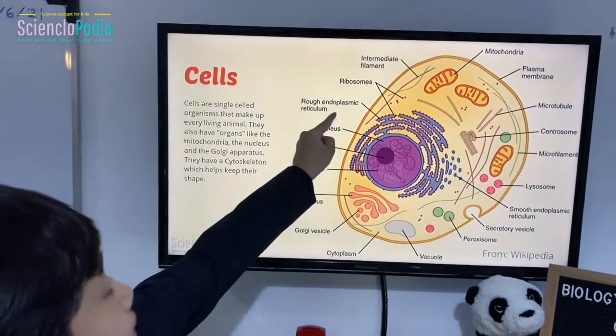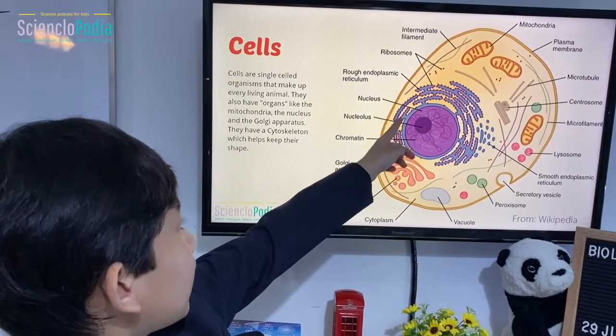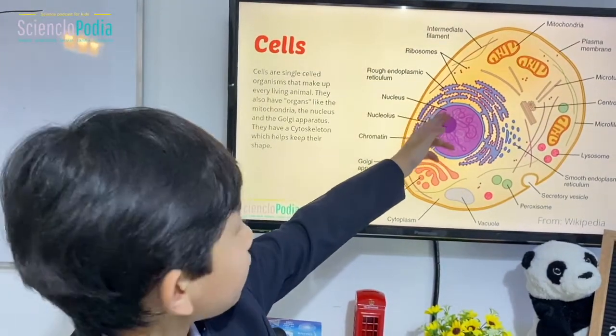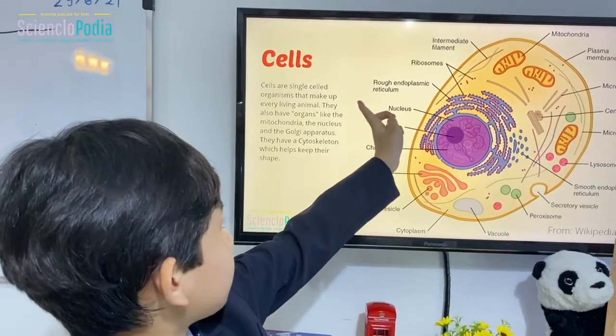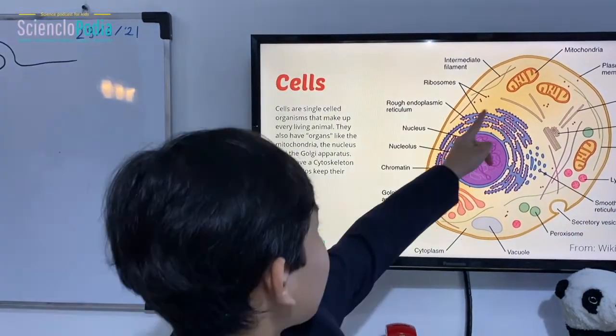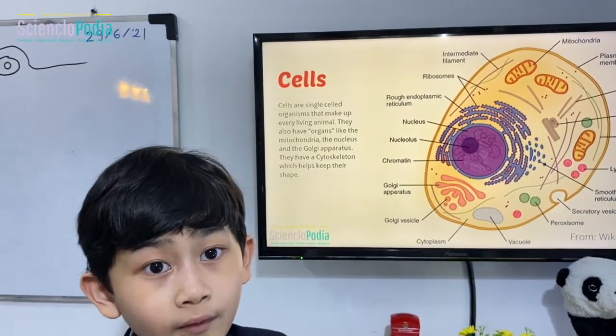There's the rough endoplasmic reticulum, which is the home for all of the ribosomes. You might think of a ribosome as a fish and the rough endoplasmic reticulum as the fish tank. The rough endoplasmic reticulum stores all of it so that there's a place where there's going to be metabolic processes.